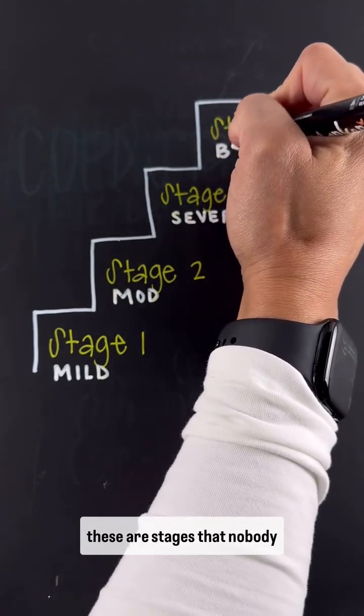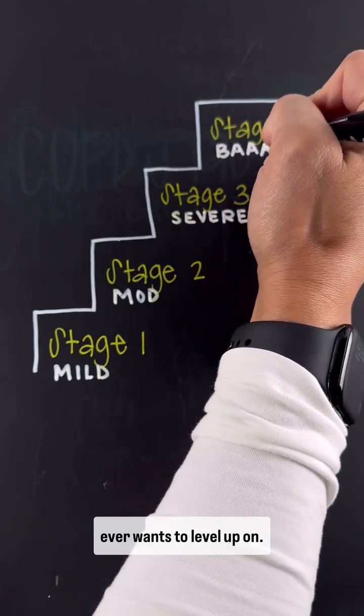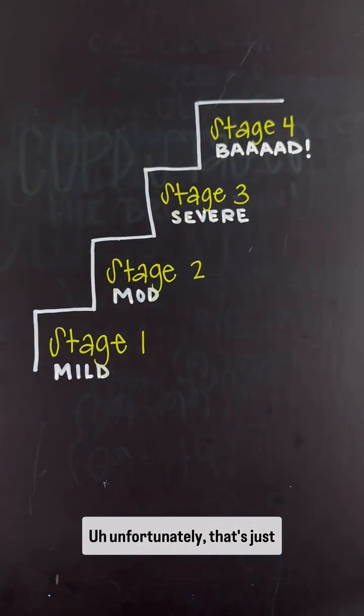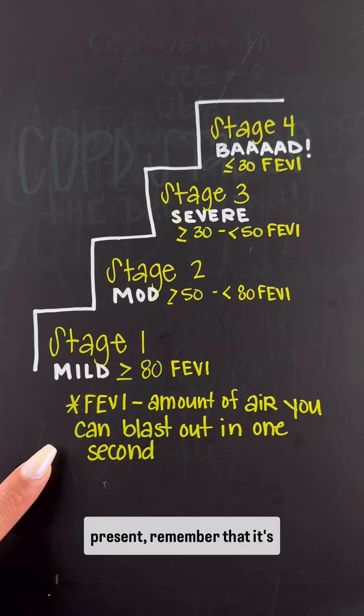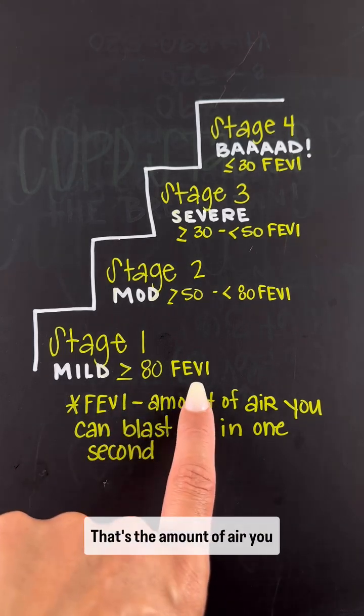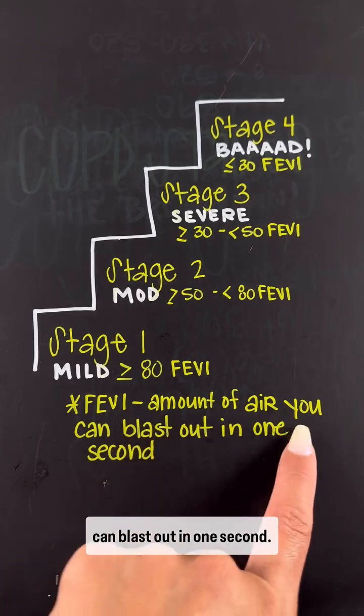Remember that these are stages nobody ever wants to level up on. Unfortunately, that's just how the disease progresses. When we have patients who present, remember that it's based on your FEV1. That's the amount of air you can blast out in one second.